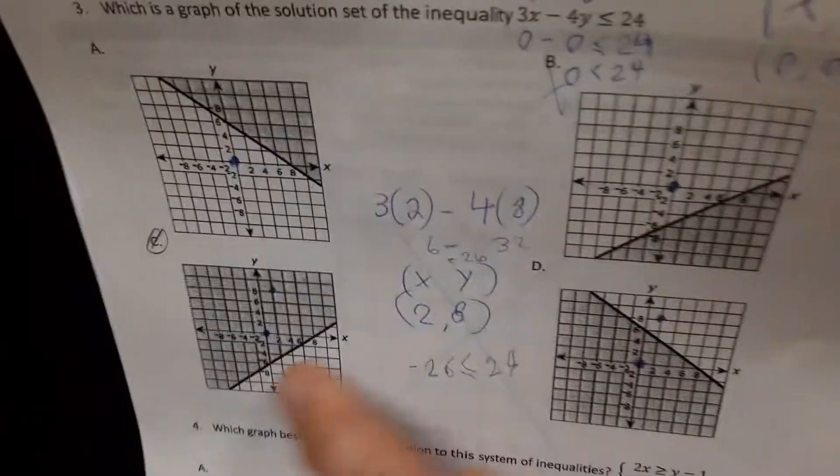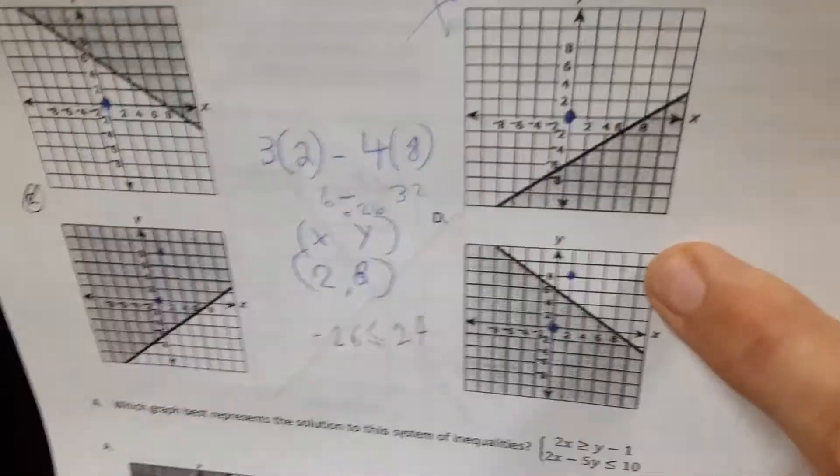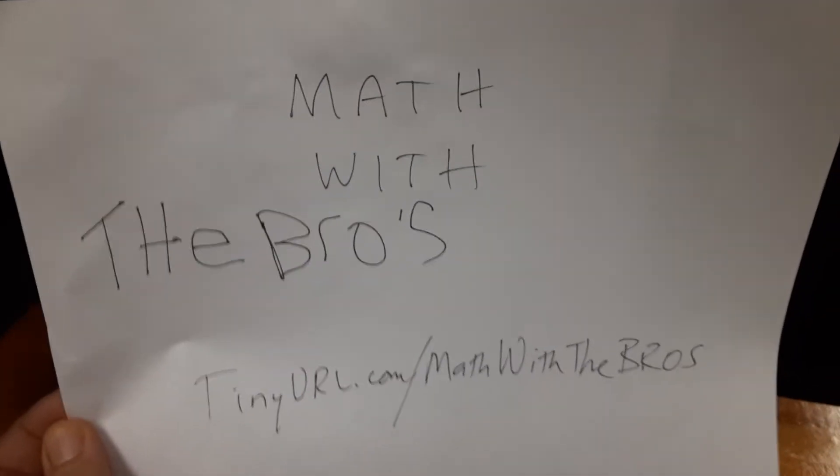So which one of these shows that it's true? C. Why is that true? Because it's not shaded. Ah, that's not shaded there. This has been another Math with Bros.